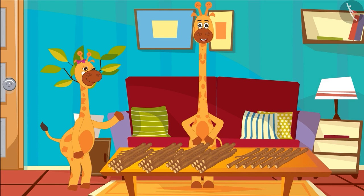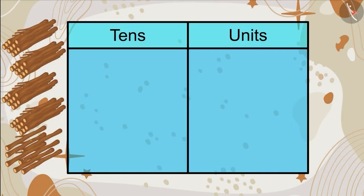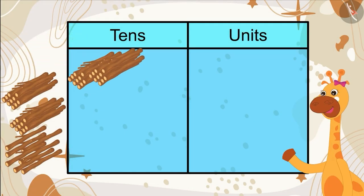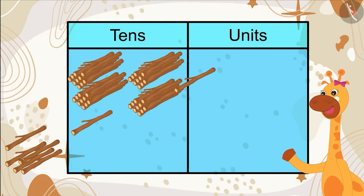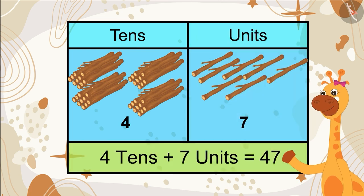Gephi, there are some sticks kept here too. Can you tell me the place value of the numbers of these sticks? Children, will you also help Gephi find the place value of numbers? Papa, we have 4 bundles of 10 sticks and 7 loose sticks. We will write 4 in the tens place and 7 in the units place. 4 tens become 40, and after adding 7, it becomes 47. We have 47 sticks in total.